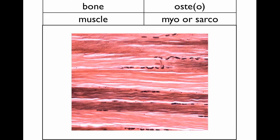When you see myo or sarco, that refers to muscle. All different types of cell structures within muscle you're going to see with myo or sarco. For example, you'll see the sarcomere, the sarcoplasmic reticulum, and myofibers or myofibrils. All of those things relate to muscle. Muscle has a lot of really specialized structures and almost all of them you're going to see with myo or sarco, usually in the prefix.